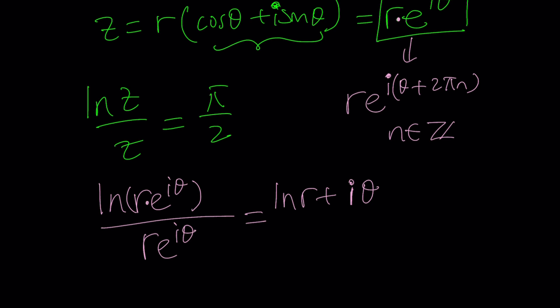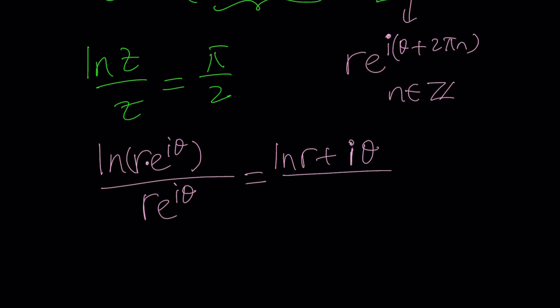Those are called branches, I think, or branch cuts, or something like that. It doesn't matter, no big deal. So now, I'm just going to stick with θ now, just to keep things simple.